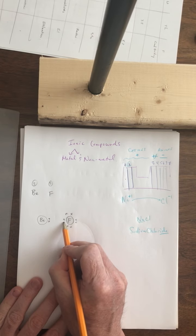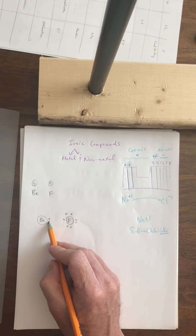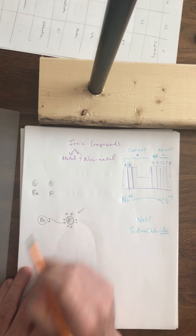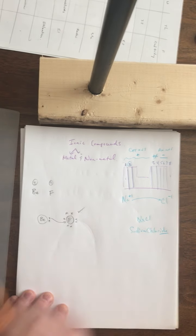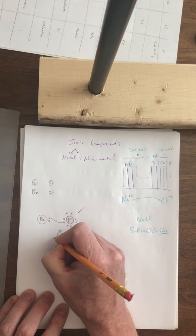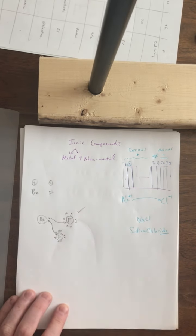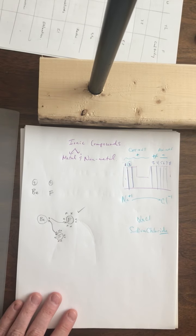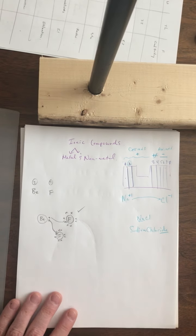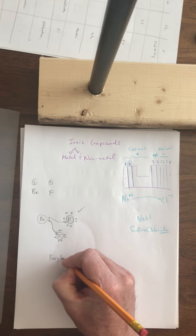Fluorine wants one extra electron to have a full outer orbit. Beryllium has two out of eight and wants to lose both. It loses one electron to the first fluorine — that fluorine is now happy with eight out of eight. But beryllium still has one valence electron it wants to get rid of, so a second fluorine atom enters and beryllium loses its remaining electron to that fluorine. Now both fluorine atoms are happy with eight out of eight, and beryllium is happy too — it's lost both electrons down to a full previous orbit.